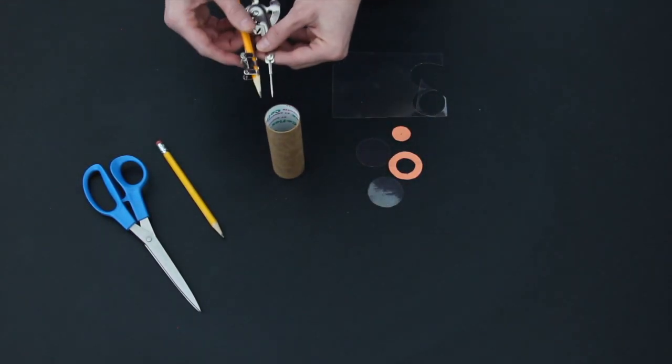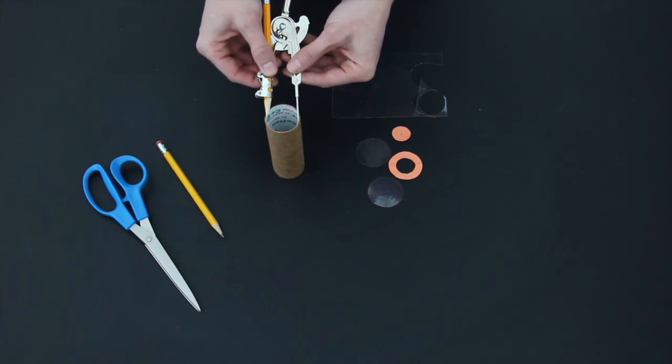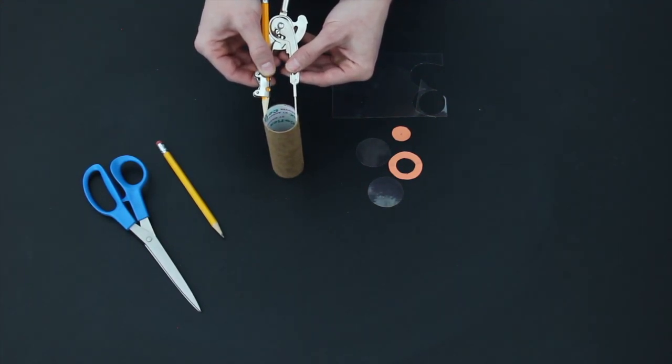Next, we're going to create a shelf to hold our colored objects in place. So we're going to need to make a transparent circle that will fit inside the tube.